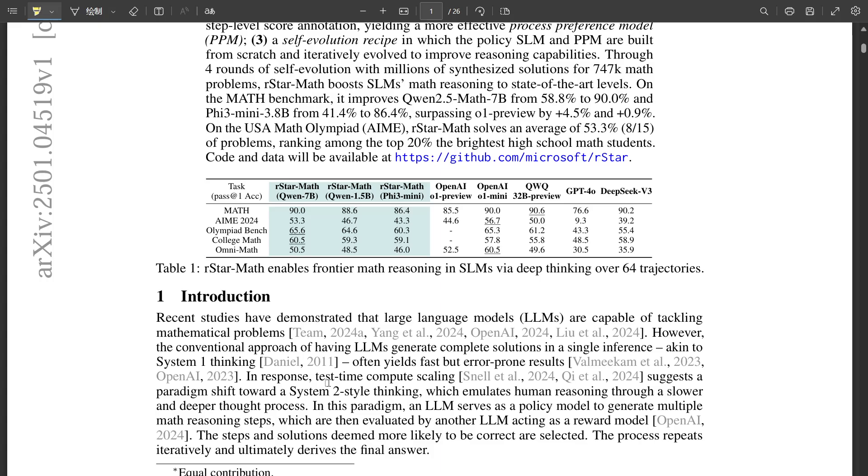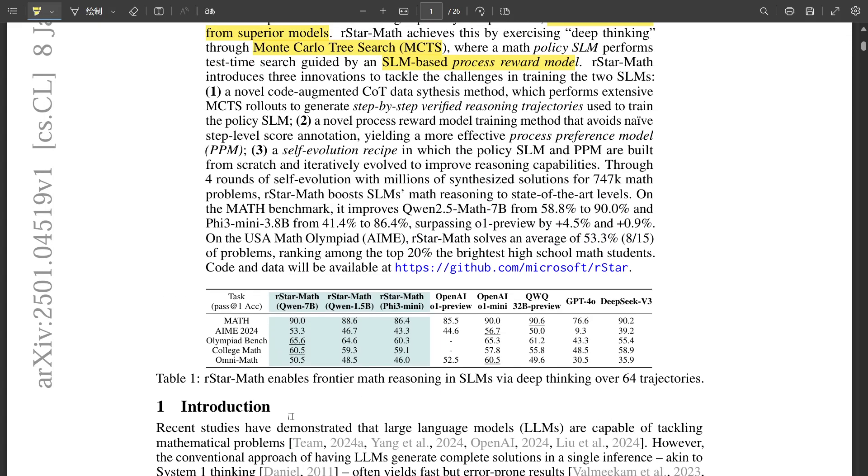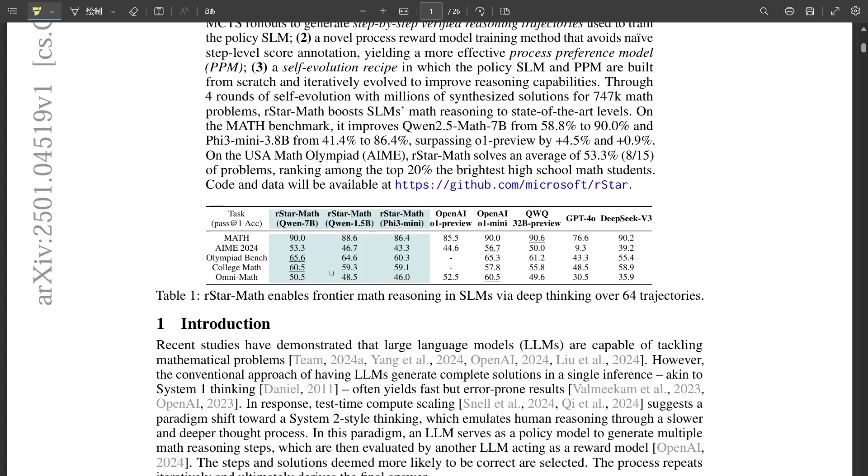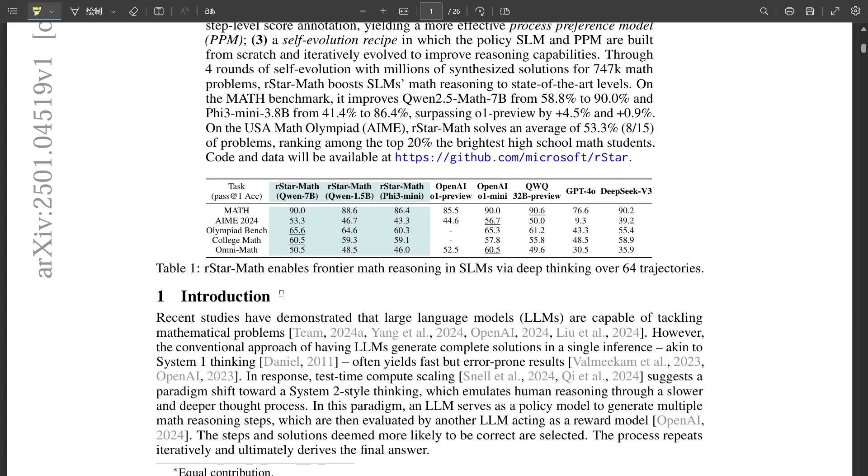System 2, on the other hand, that's that slower, more deliberate thought process. It's what we engage in when we carefully work through a math problem step by step, justifying each move. So is R-Star Math aiming to train AI to think more like System 2? Exactly. It's encouraging that AI to think more deeply, more strategically, and to develop a more robust understanding of those underlying mathematical principles.